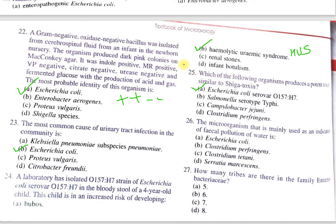Question 26: the microorganism mainly used as an indicator of fecal pollution of water is — A. Escherichia coli, B. Clostridium perfringens, C. Clostridium tetani, D. Serratia marcescens. The correct option is A, Escherichia coli.